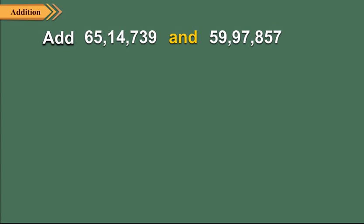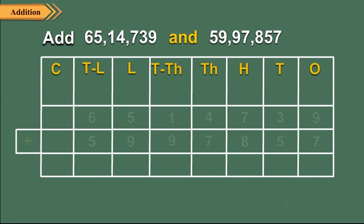Let us add 65,14,739 and 59,97,857. Arrange the numbers in the correct places of ones, tens, hundreds, thousands, ten thousands, lakhs, and ten lakhs.